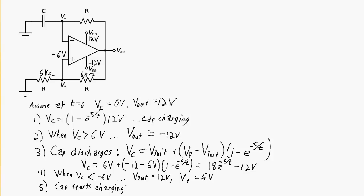The capacitor tries to charge back up to 12 volts again using the same equation but with updated initial and final voltages. The voltage across the capacitor equals 12 minus 18e to the negative t over tau. Once it reaches 6 volts, the inverting terminal is greater than the non-inverting terminal, and the output switches again to minus 12 volts. We get oscillation between 12 volts and minus 12 volts at the output, as the capacitor charges up to 6 volts, then down to minus 6 volts, continuously.